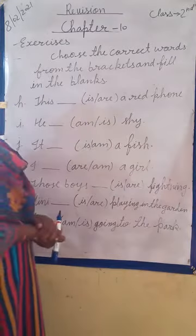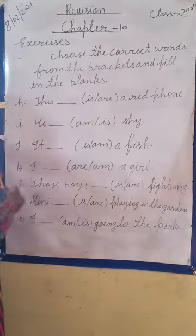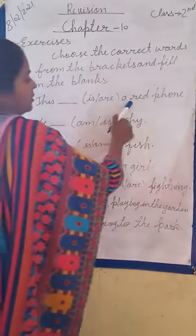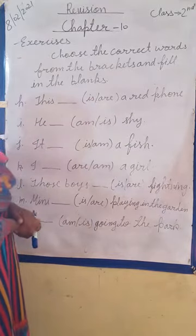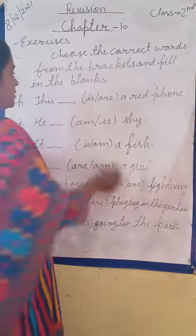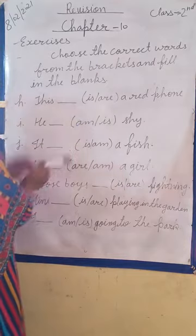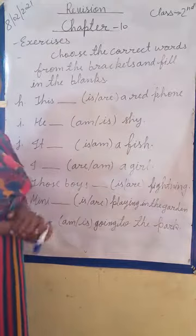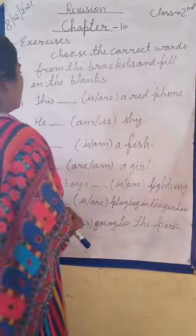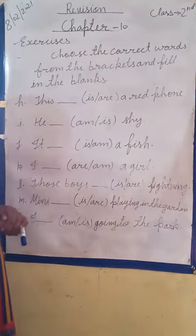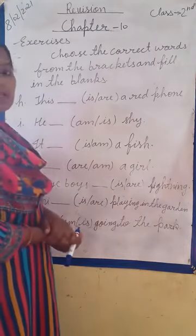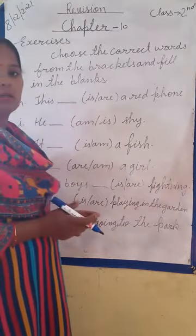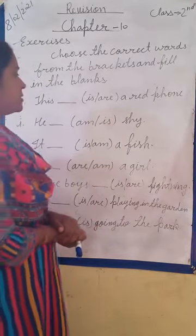So listen me carefully. Now number H is: dash — is or are — red phone? Here are two options: is and are. Which option is the correct word for this sentence? 'This' is a singular pronoun. Maine kya bataya tha? Singular noun ya pronoun ke saath 'is' aata hai.